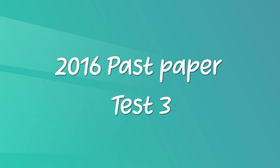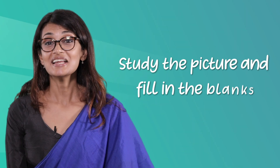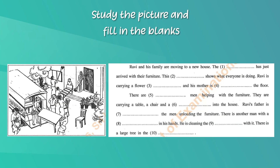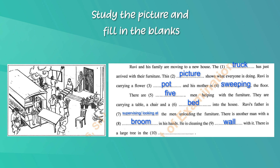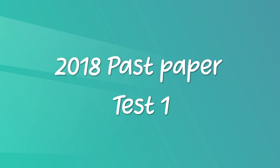Describing pictures should be easy for you now. Let's look at a question from the 2016 past paper, Test 3. Study the picture and fill in the blanks. As we read the description, let's fill in the blanks together. 'Ravi and his family are moving to a new house. The truck has just arrived with their furniture. This picture shows what everyone is doing. Ravi is carrying a flower pot and his mother is sweeping the floor. There are five men helping with the furniture. They are carrying a table, a chair and a bed into the house. Ravi's father is supervising — looking at the men unloading the furniture. There is another man with a broom in his hands; he is cleaning the wall with it. There is a large tree in the garden.'